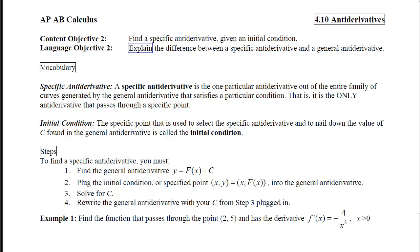That specific point is called the initial condition, and it is used to select the specific antiderivative and to nail down the value of c found in the general antiderivative.